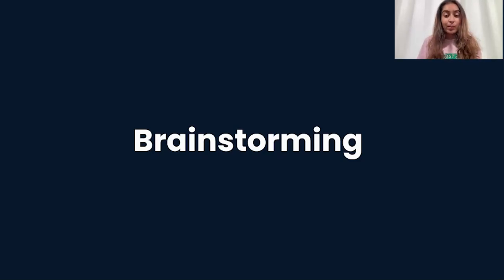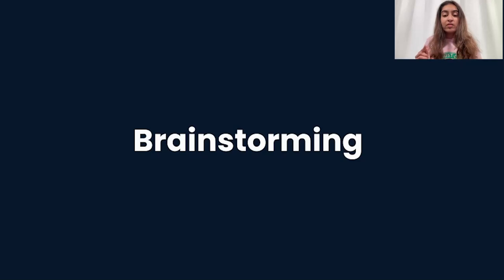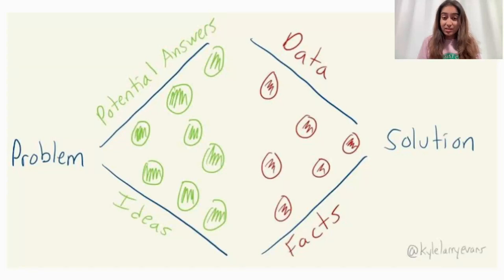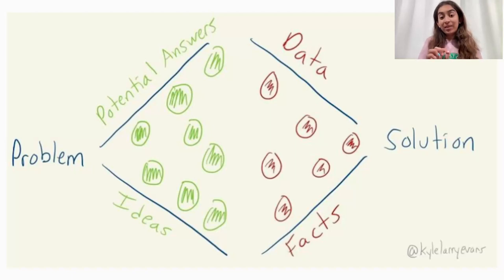Even if you have an aptitude for problem solving or ideating, you need to be able to put constraints in order to use your time effectively, as well as think through a number of different types of solutions and understand the differences between them to optimize for the best solution. Anyone who has led a brainstorm knows that constraints make the process more efficient — it's like a writing prompt. Your brain has so much going on, and giving your brain something to latch onto, to start, and to know where boundaries are helps the creative process.